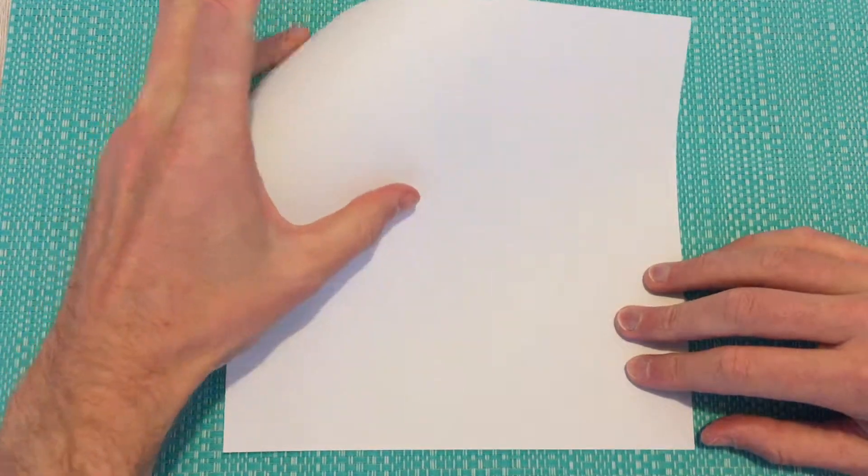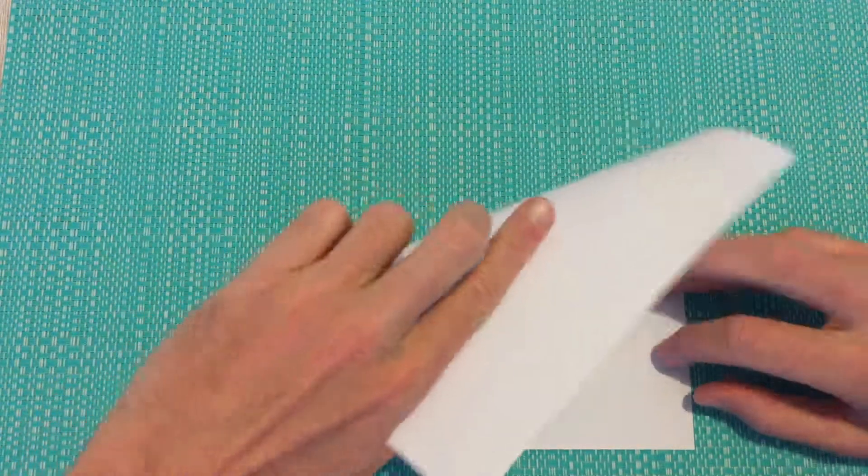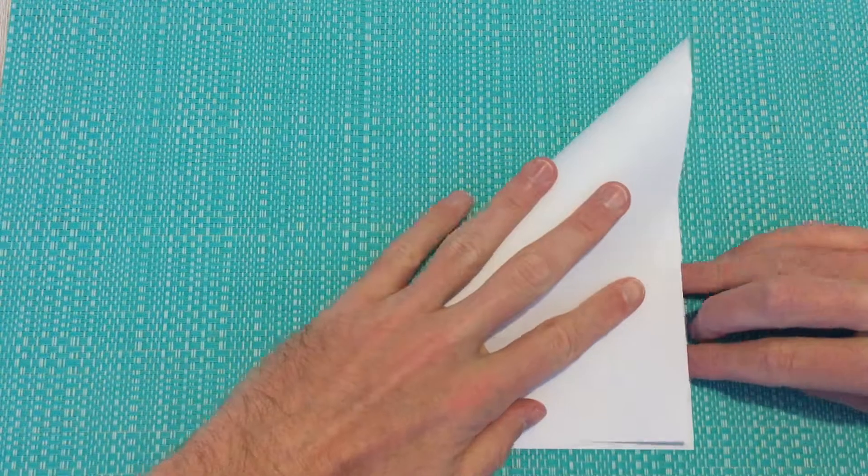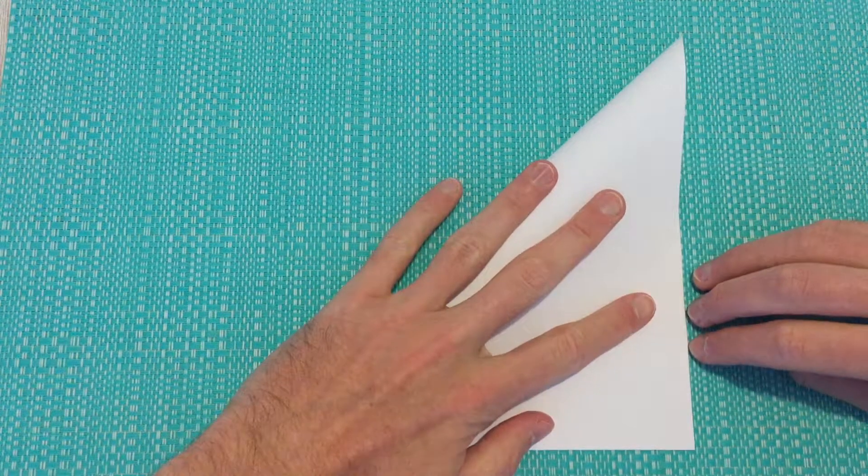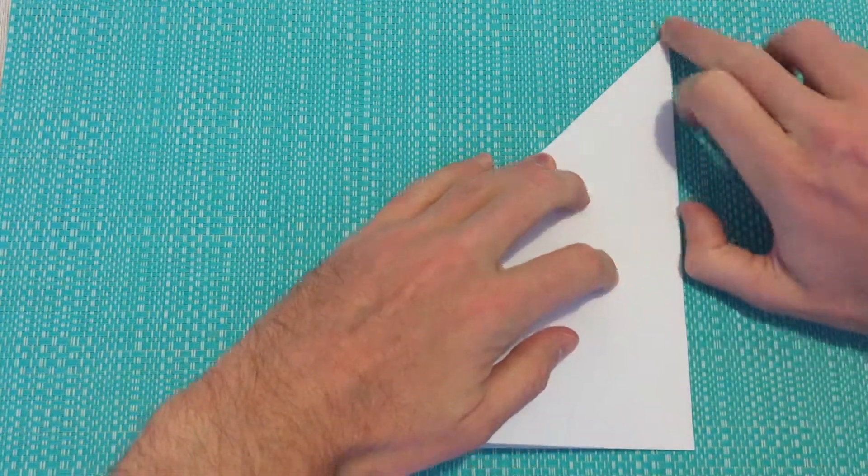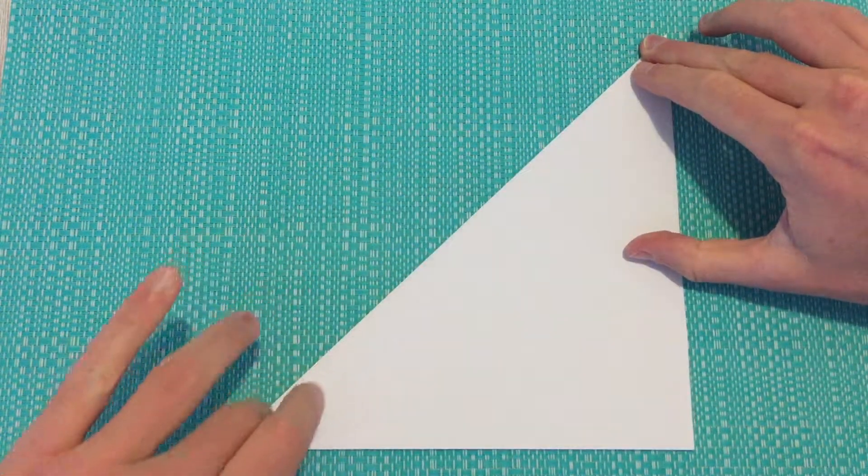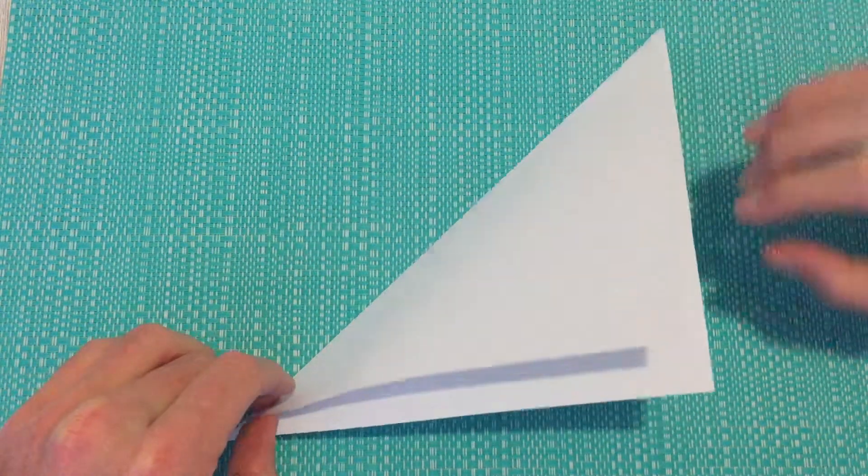Today we'll be making an origami seal. So we're starting with a square sheet of paper. We're going to fold from the top left down to the bottom right corner. And we'll create a crease. And then we'll open that back up.